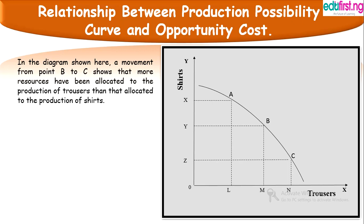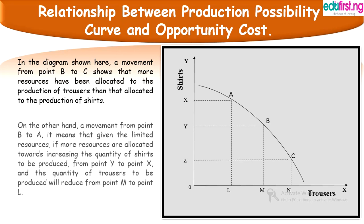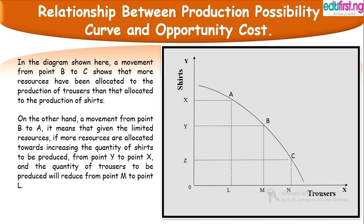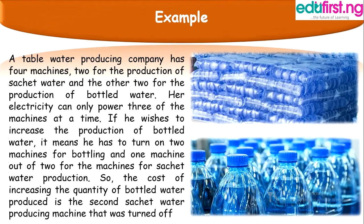With the aid of the diagram shown here, a movement from point B to point C shows that more resources have been allocated to the production of trousers than to the production of shirts. On the other hand, a movement from point B to point A means that given the limited resources, more resources are allocated towards increasing the quantity of shirts from point Y to point X, and the quantity of trousers will reduce, with movement along the curve from point M to point L.